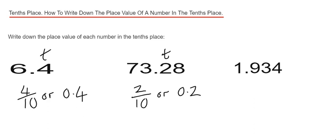Let's have a look at example three. This time we've got 1.934. Again, we're just looking for the first digit after the decimal point. This time it is the 9. We can write this down as 9 tenths, or as a decimal as 0.9.